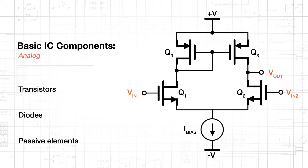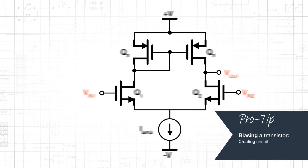However, in analog ICs, transistors are intended to amplify or produce continuously varying signals. When we bias a transistor, we create circuit conditions that allow it to properly respond to small changes in voltage. For example, an input stage of an amplifier IC might employ the MOSFET differential pair configuration shown here.